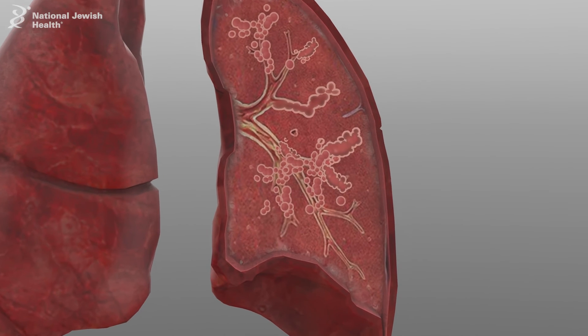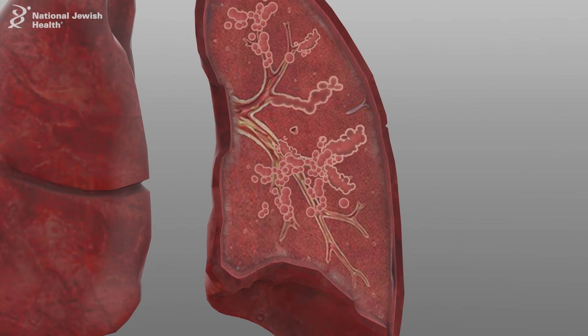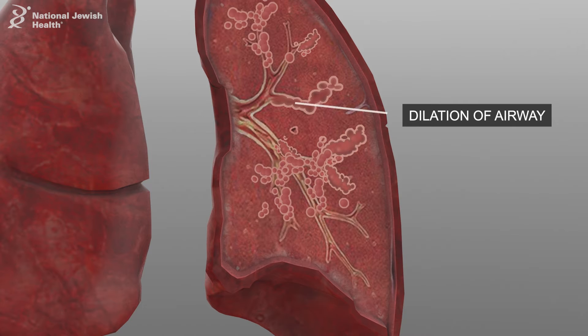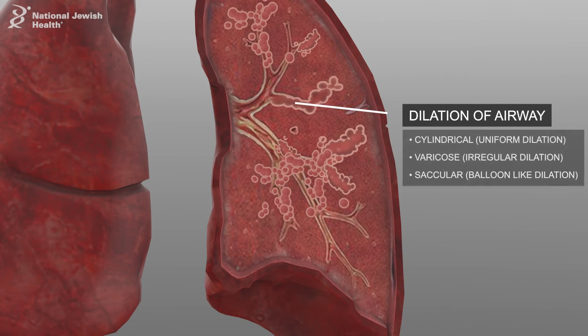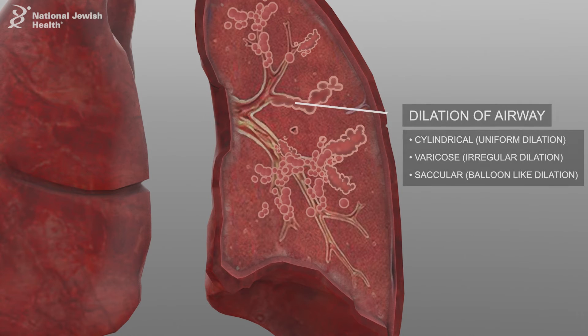The primary pathologic feature on gross inspection is dilation of the airway. This can be described as cylindrical, which is uniform dilation; varicose, which is an irregular dilation; or saccular, which is a balloon-like dilation of the airway.